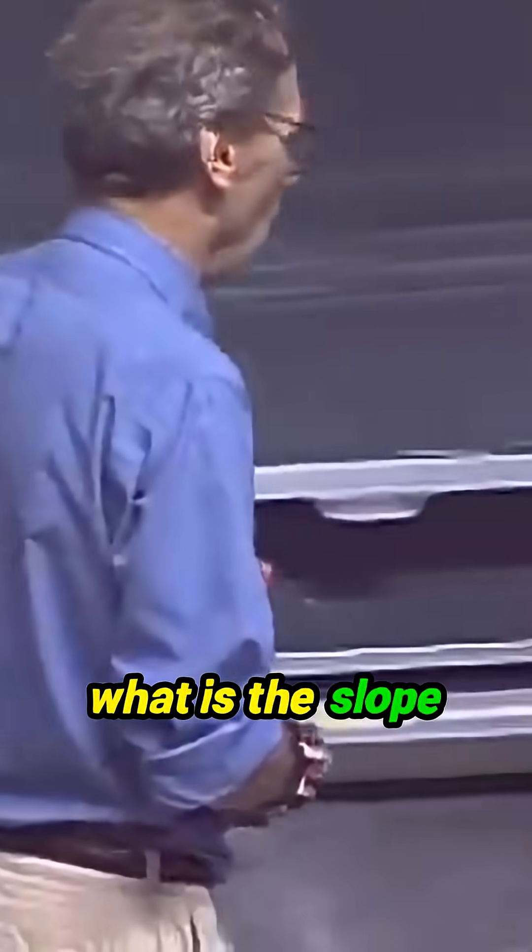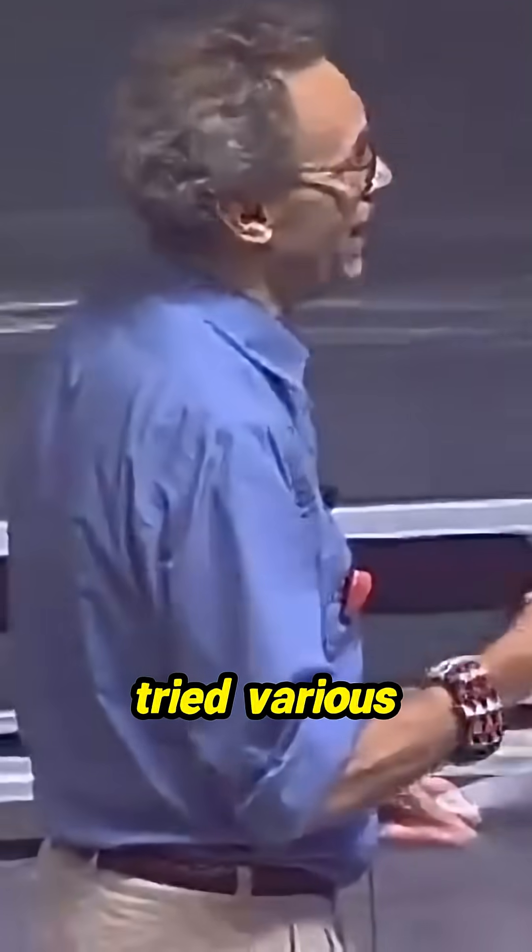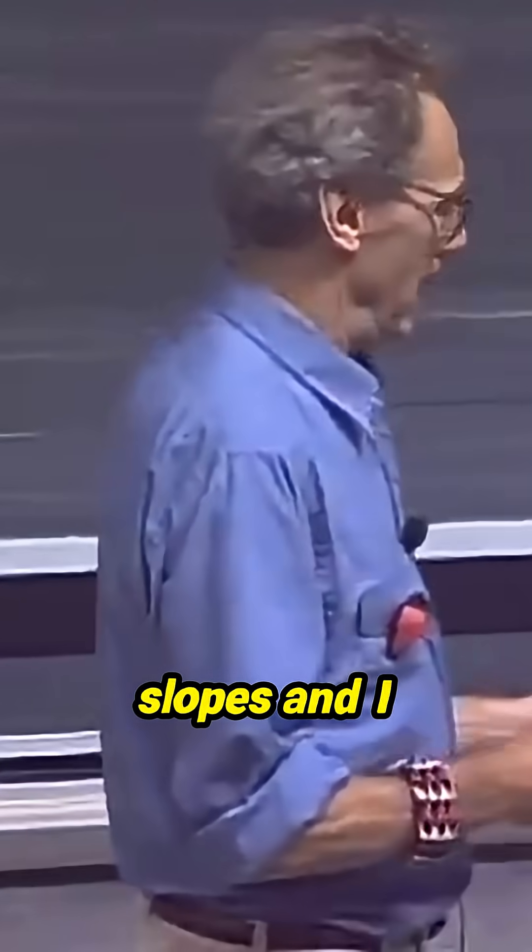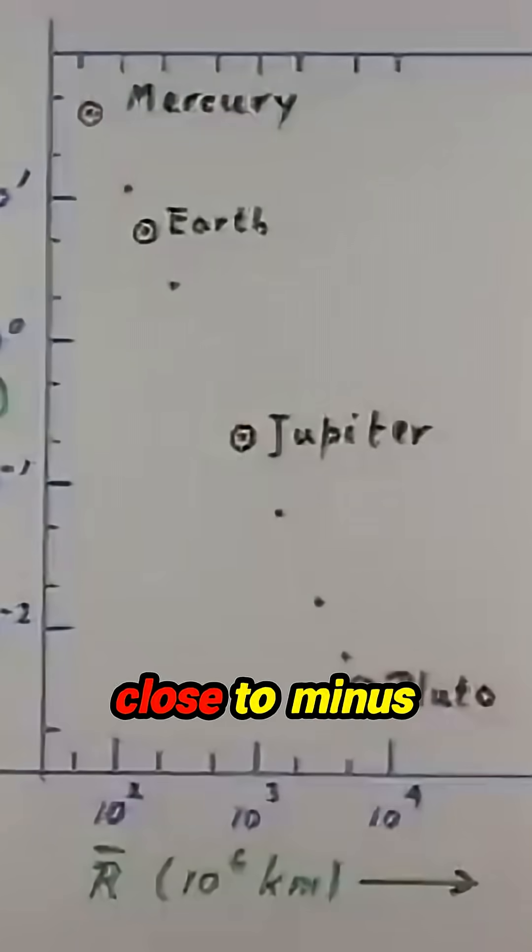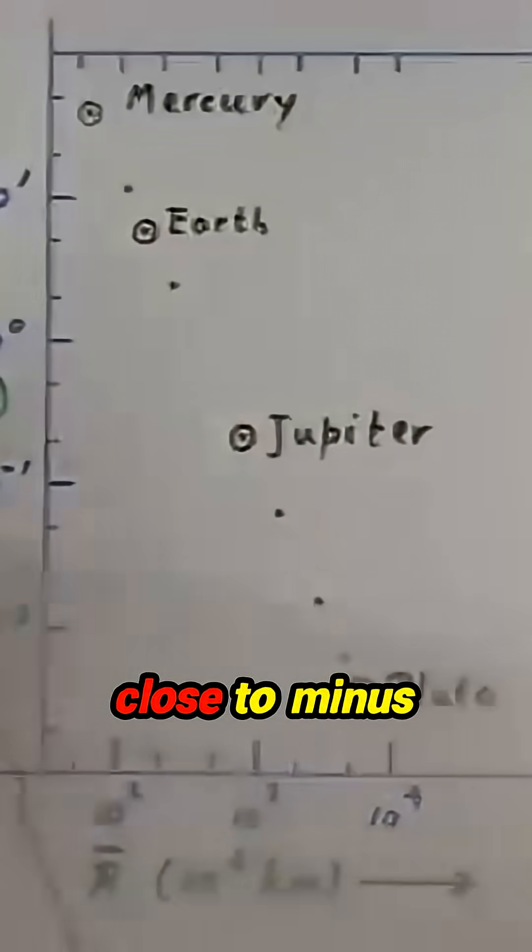And so what is the slope of that line? Well, I tried various slopes and found that the slope is very close to minus two.